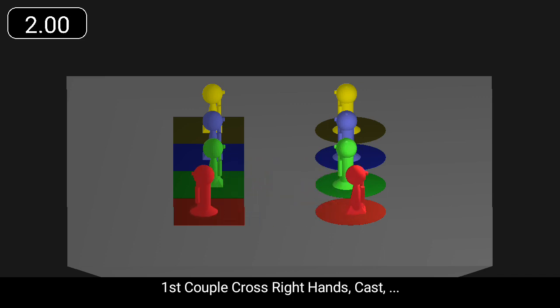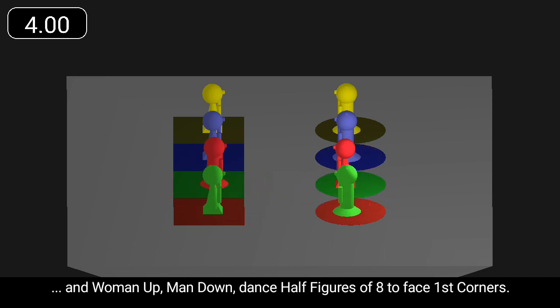First couple cross right hands, cast, and woman up, man down dance half figures of eight to face first corners.